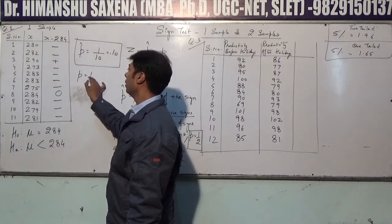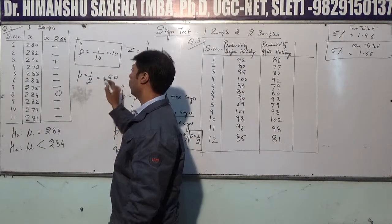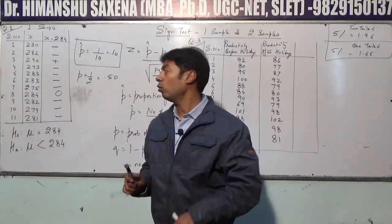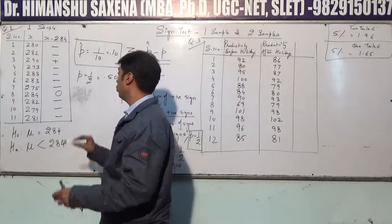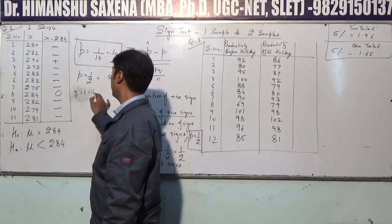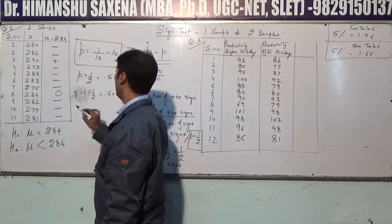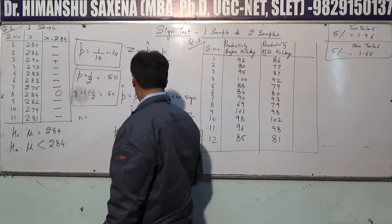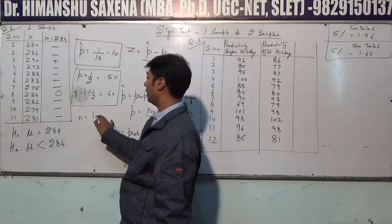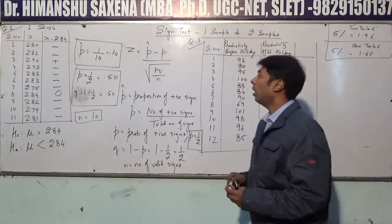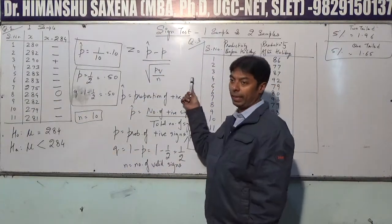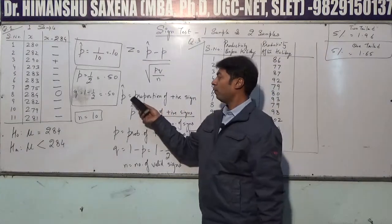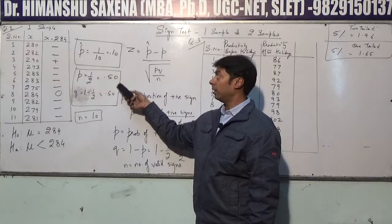P = 1/2 = 0.50 (probability of positive sign, always 0.50). Q = 1 − 1/2 = 0.50. The number of valid signs N = 10 (one value was 0 and was excluded from 11 total values). Now we place these values into the main Z formula.